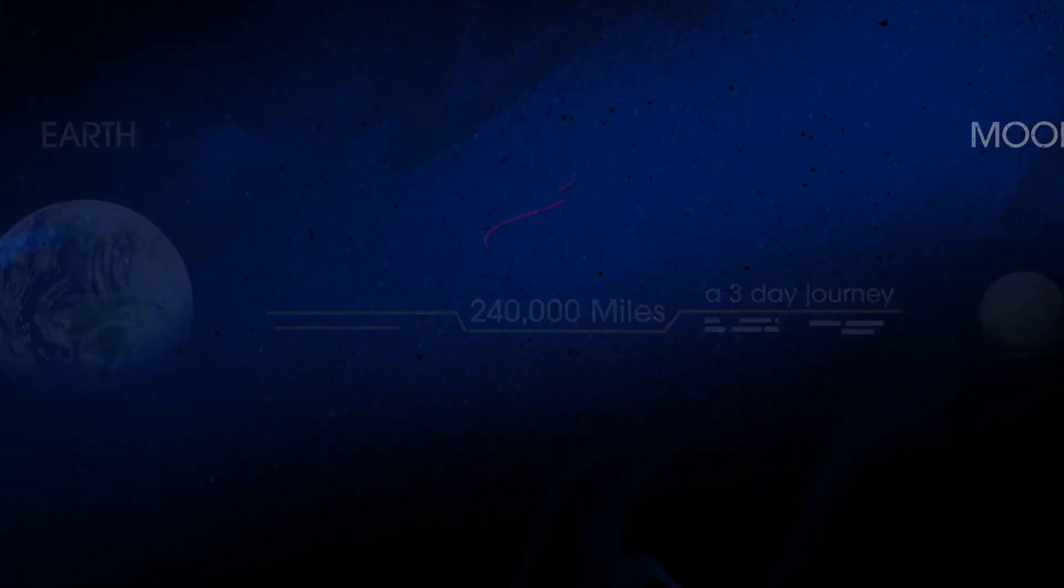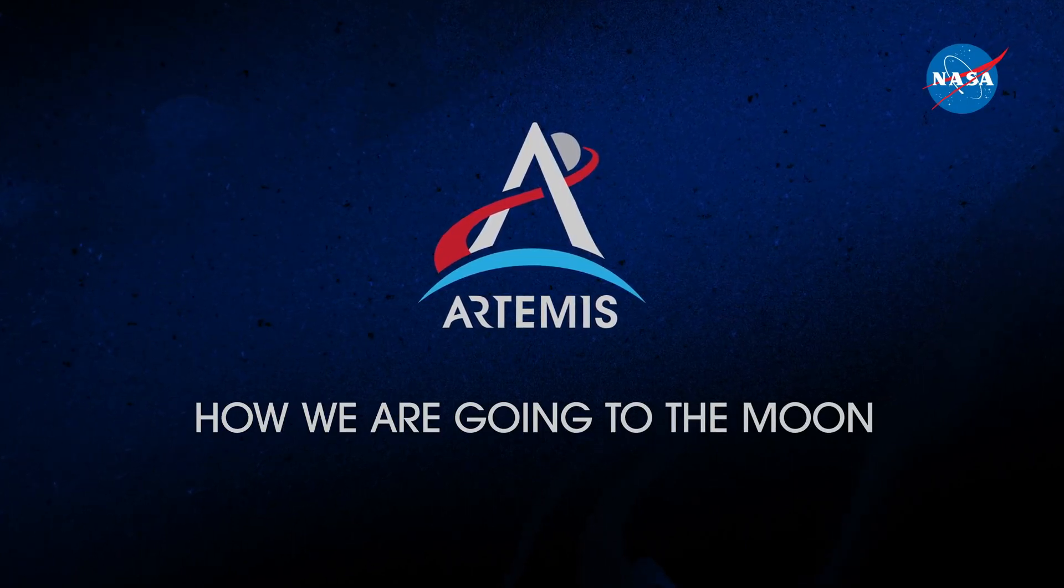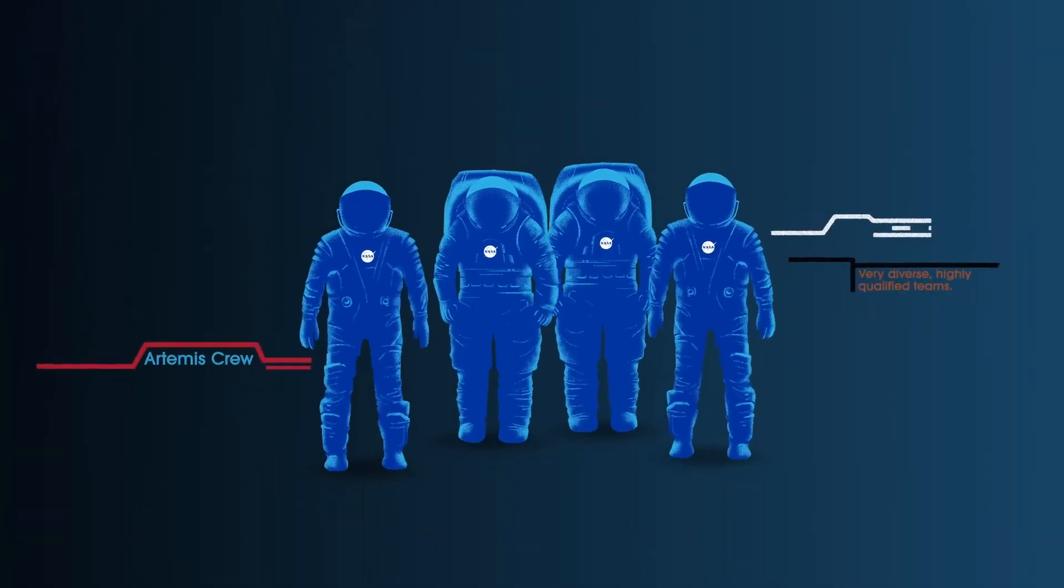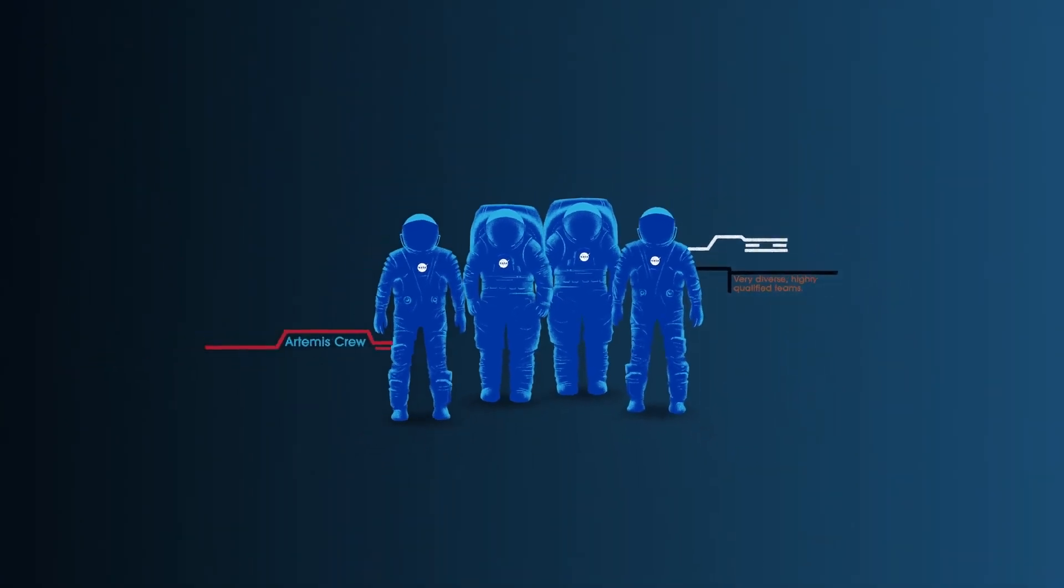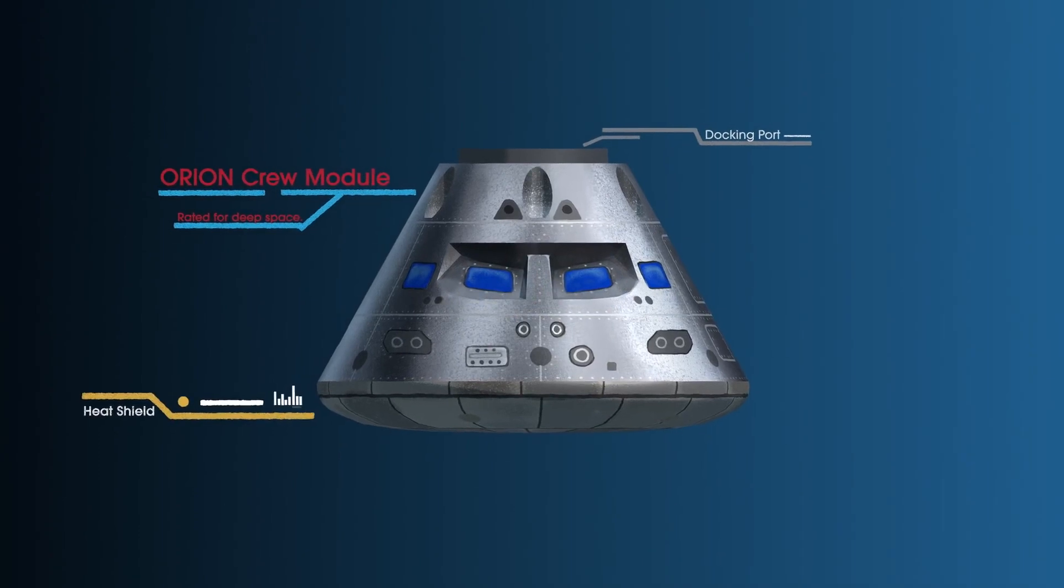So, what will an Artemis mission look like? Everything is designed and tested with our most important element in mind, the astronauts. This is their deep-space, human-rated spacecraft called Orion, built in three parts.